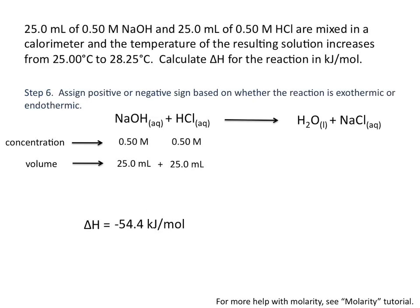We then need to assign a positive or negative sign based on whether the reaction is exo or endothermic. In this case, because the temperature of the surroundings is increasing and heat is being transferred from our system, which is our reaction to the surroundings, which is the solution, and the temperature of the solution thus increased, that the reaction must be exothermic. And so we put a negative sign in front of our delta H value.